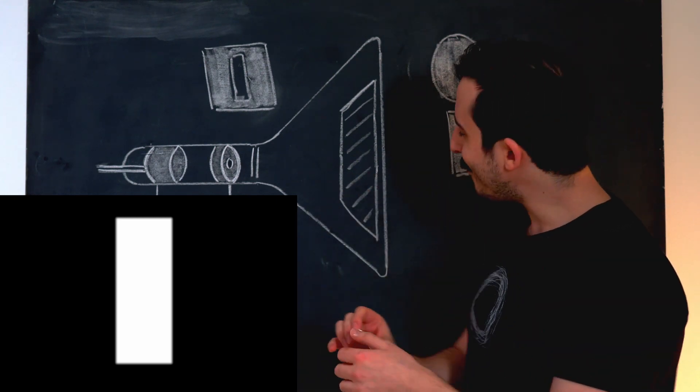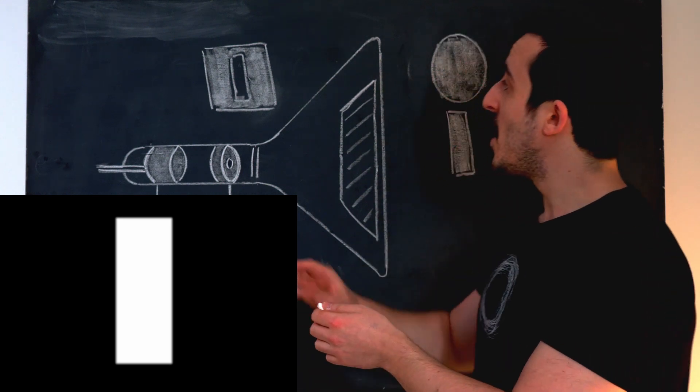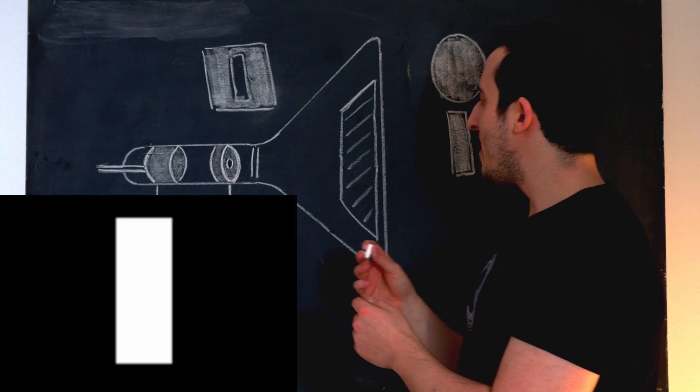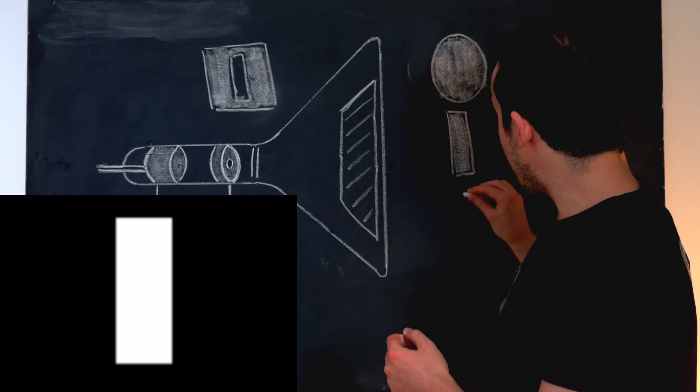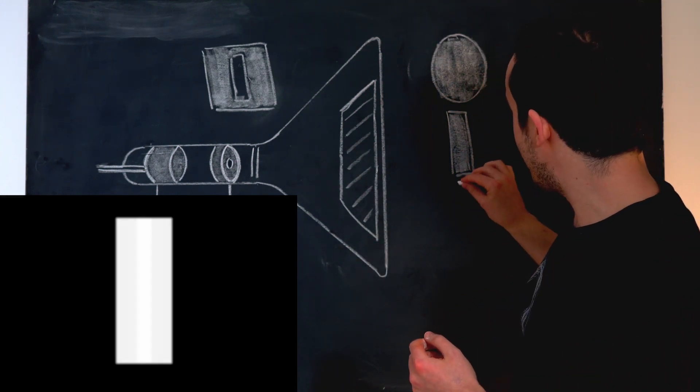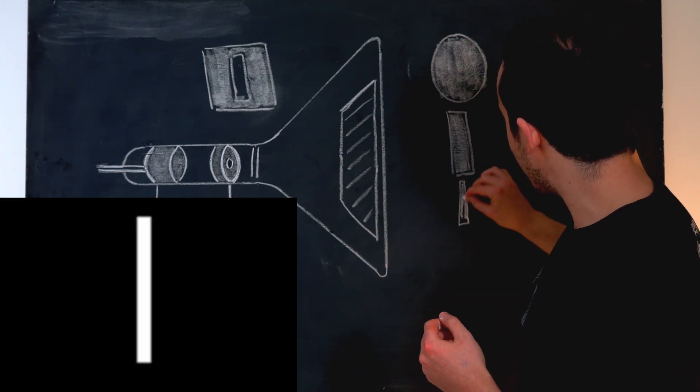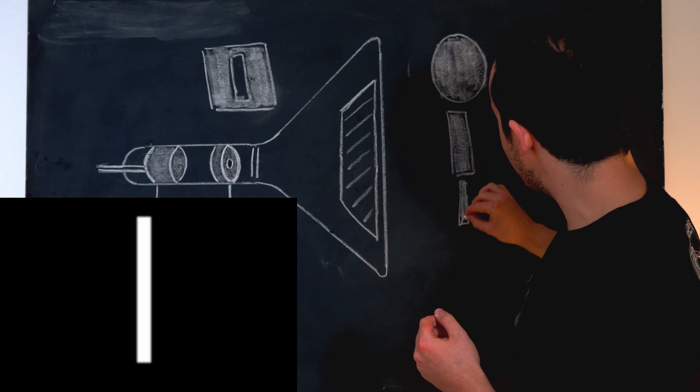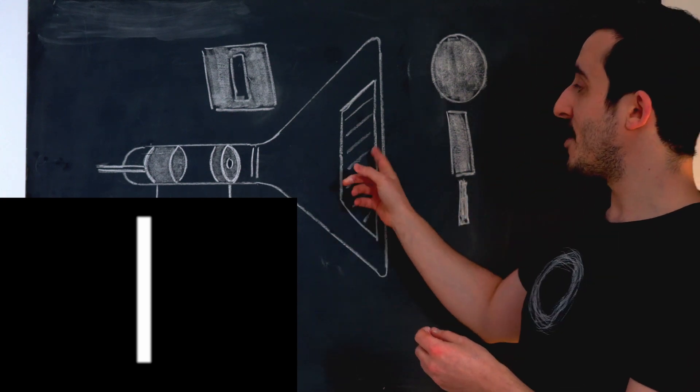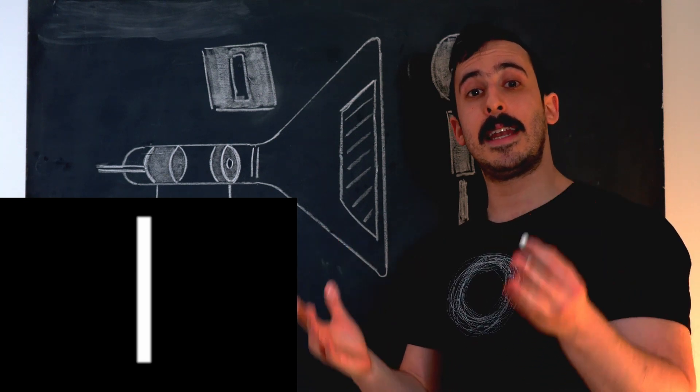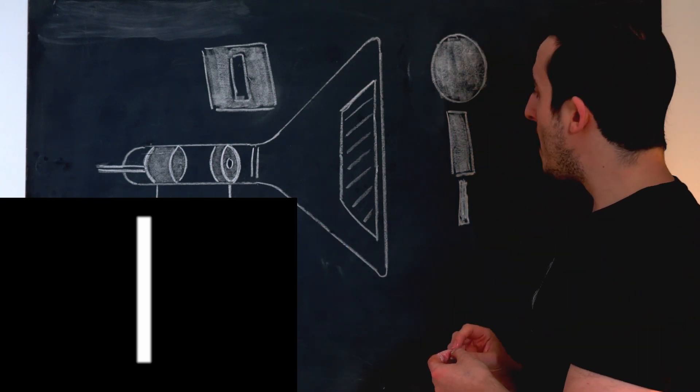But hang on. What we're going to do next is, we are going to make the width of this slit thinner. And when we do that, what we notice at first is that simply the pattern gets thinner, right? And again, that is exactly as we would expect. As we make the slit thinner, the pattern on the screen gets thinner. Again, this is still totally consistent with the idea that electrons are particles.